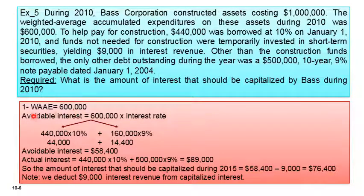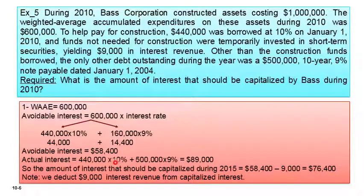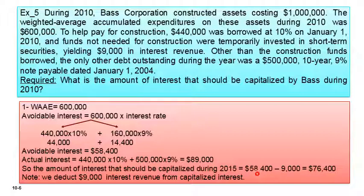Weighted average accumulated expenditure is 600,000. For avoidable interest: 440,000 times 10% (construction loan) and the remaining 160,000 times 9% (other debt). Avoidable interest = 58,400. Actual interest: 440,000×10% + 500,000×9% = 89,000. The lower is 58,400. We then deduct the 9,000 interest revenue from the construction loan: 58,400 minus 9,000 interest revenue = 49,400. Do not forget to deduct the interest revenue from the capitalized interest.